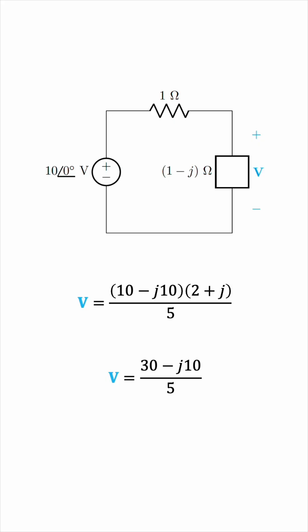Expanding the top and collecting like terms gives us 30 minus J10. If you've noticed, we write the J before the number, which is what we typically do in electrical engineering. Mathematicians usually write 10i instead of J10, but we like to put this imaginary unit first, and then put the numeric value. It's just an engineering convention. We'll now separate the fractions, giving us a real part of 6, and an imaginary part of negative 2.